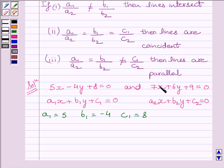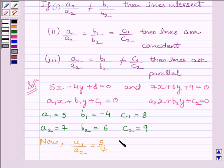Now, comparing these two equations, we get A2 equals 7, B2 equals 6, and C2 equals 9. Now, A1 upon A2 equals 5 upon 7, B1 upon B2 equals minus 4 upon 6, which is further equal to minus 2 upon 3.